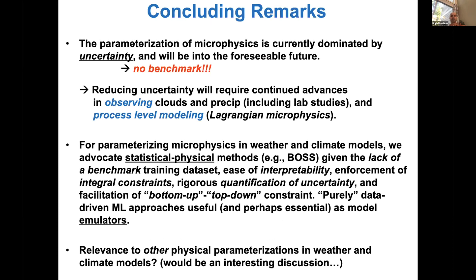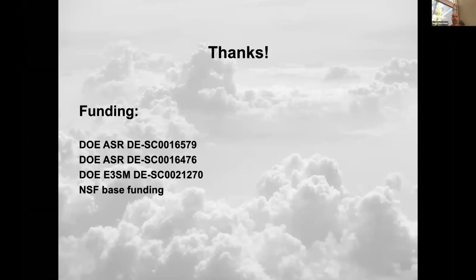A few concluding points: the parameterization of microphysics is currently dominated by uncertainty, both at the process level and because of the inability to resolve all the particles in a cloud, and this is true into the foreseeable future — we have no true benchmark model. Reducing uncertainty will require continued advances in observing cloud and precipitation and improved process-level modeling. For parameterizing microphysics in weather and climate models, we advocate combined statistical-physical methods, given the lack of a benchmark training data set, ease of interpretability when a physical framework is included, enforcement of integral constraints, rigorous quantification of uncertainty, and facilitation of bottom-up and top-down constraint. There may also be relevance to other physical parameterizations like boundary layer and cumulus parameterizations.